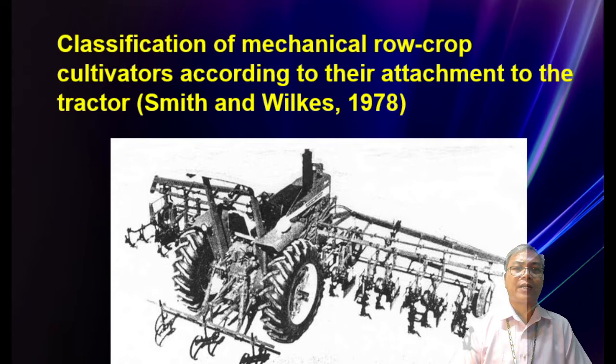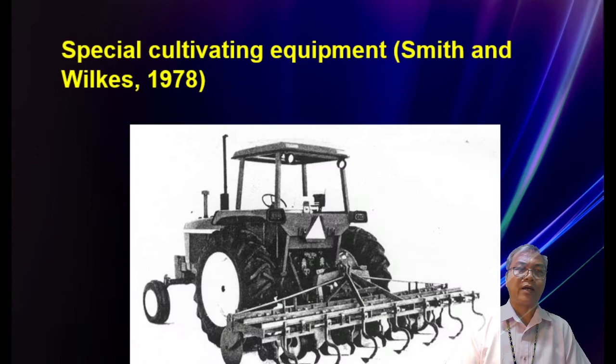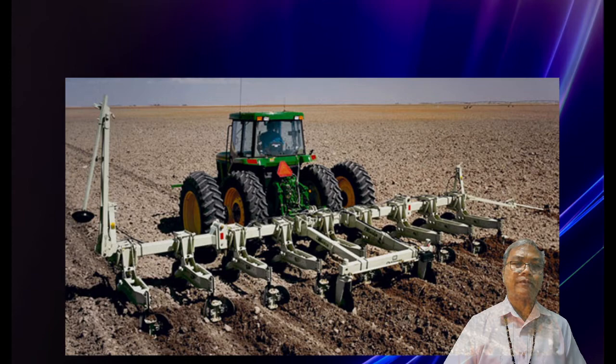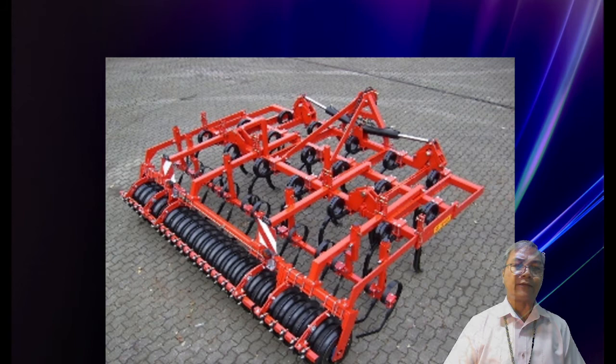Classification of mechanical row crop cultivators according to their attachment to tractors: Number one is the central forward tractor-mounted, attached to the front of the tractor. Number two is the rear-mounted. We also have special cultivating equipment such as the beet and bean cultivator, and the lister cultivator, row weeders, field cultivators, subsoil and chisel cultivators.